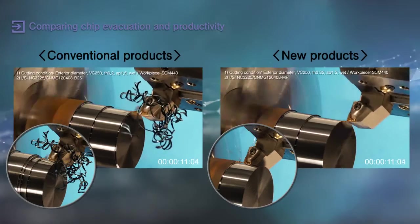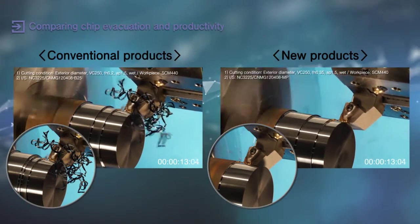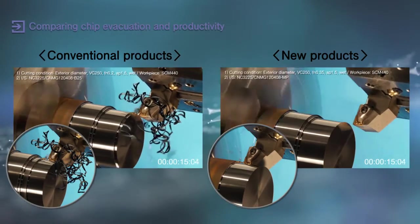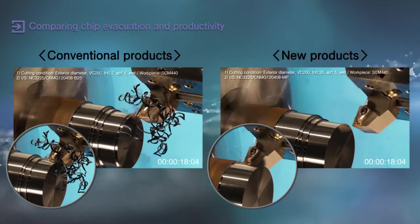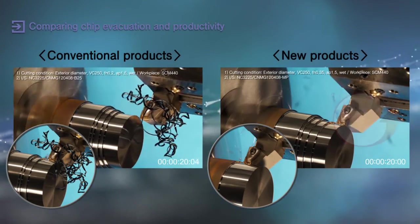The new MP chip breaker with NC3215 and NC3225, which are turning inserts for steel, will deliver high productivity and excellent chip disposability.